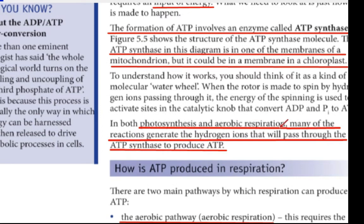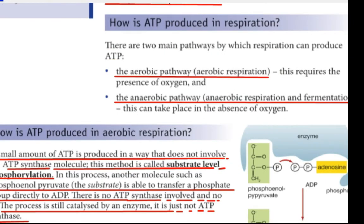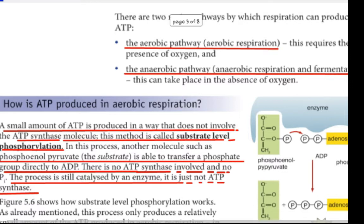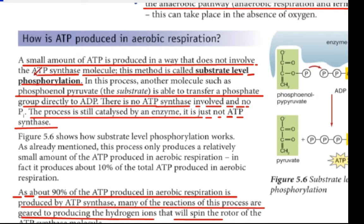In both photosynthesis and aerobic respiration, many reactions generate hydrogen ions that will pass through the ATP synthase to produce ATP. The aerobic pathway includes aerobic respiration, and the anaerobic pathway includes anaerobic respiration and fermentation. A small amount of ATP is produced in a way that does not involve the ATP synthase molecule — this method is called substrate-level phosphorylation.